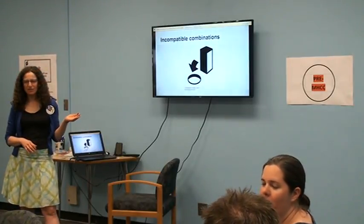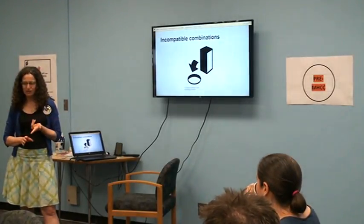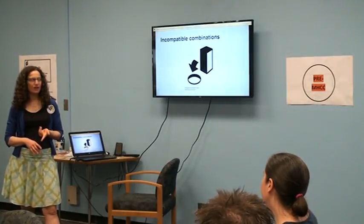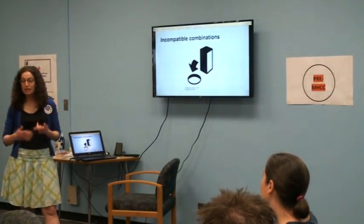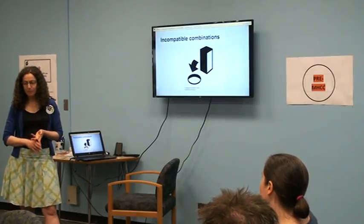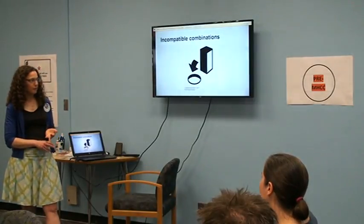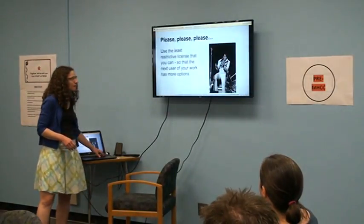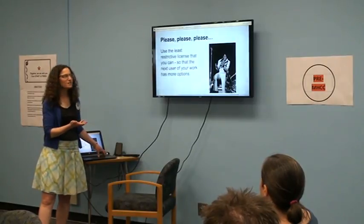When you have incompatible licenses, you can write to the rights holder and ask them to change their license or give permission for another use - they'll often say yes since they already chose a Creative Commons license. You can also ask a librarian to find something equivalent with a compatible license, or create your own content with a less restrictive license. The moral: use the least restrictive license for downstream users.